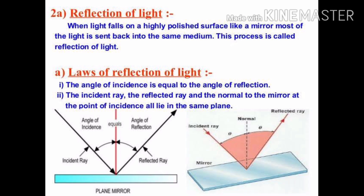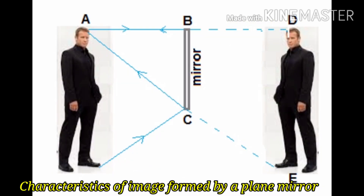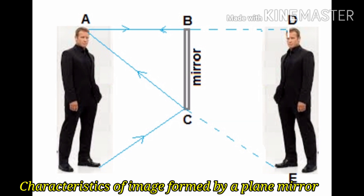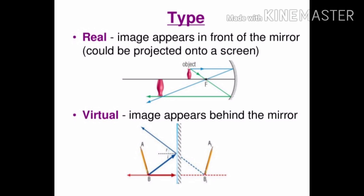These laws of reflection are applicable to all types of reflecting surfaces including spherical surfaces. You are familiar with the formation of image by a plane mirror. What are the properties of the image? Image formed by a plane mirror is always virtual and erect. A real image is formed in front of the mirror and could be projected on a screen, whereas a virtual image appears behind the mirror and cannot be projected on a screen.